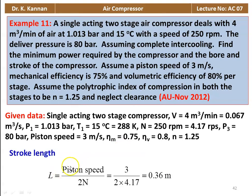First, we calculate the stroke length from the piston speed. Piston speed = 2Ln, so stroke length L = piston speed / (2 × n) = 3 / (2 × 4.17) = 0.36 meters, where 4.17 is the speed in revolutions per second.